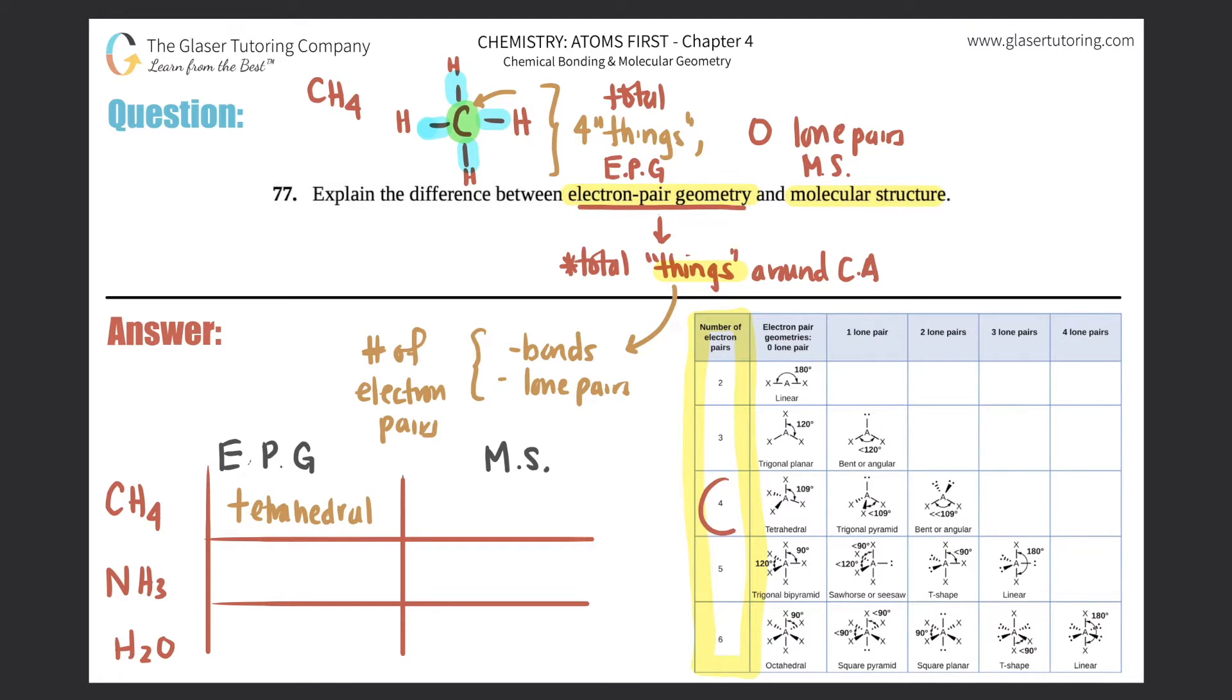So in this case I'm still looking for four, and I narrowed it down to these three things. But now I see that methane, the carbon in the middle, has zero lone pairs, so the molecular structure is also tetrahedral. So in this case they are exactly the same.